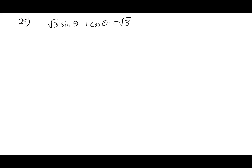This is 6.2, number 25. If you have the same problem, hopefully we'll fix it up right here. So number 25, I got it written on the next slide already. So square root of three sine theta plus cosine theta is equal to root three. And we are in degrees. So this one you do have to kind of pay attention to, make sure that you know where you're coming from on that.